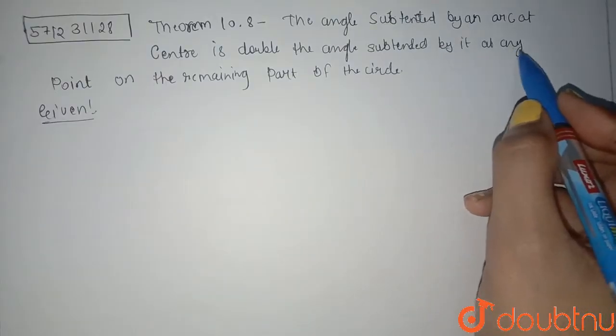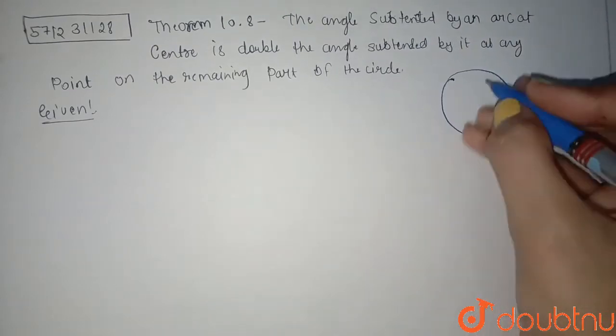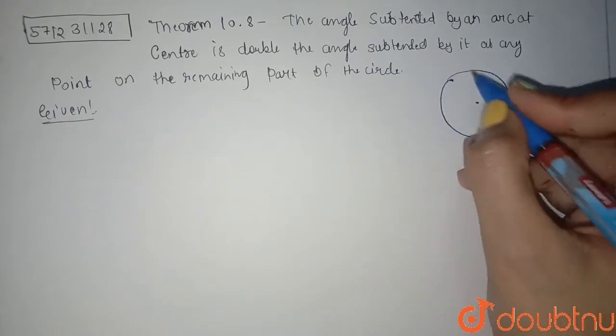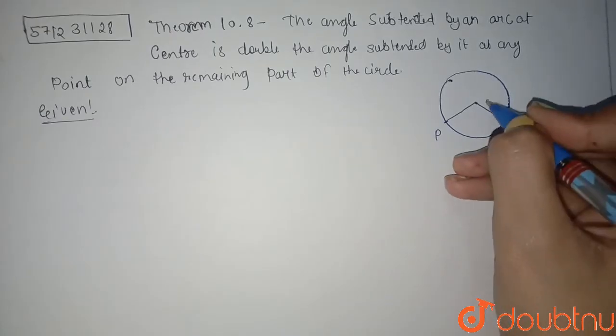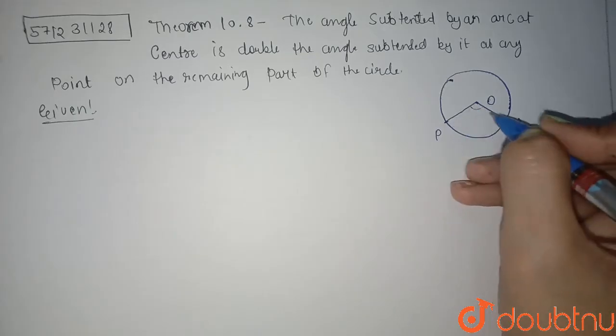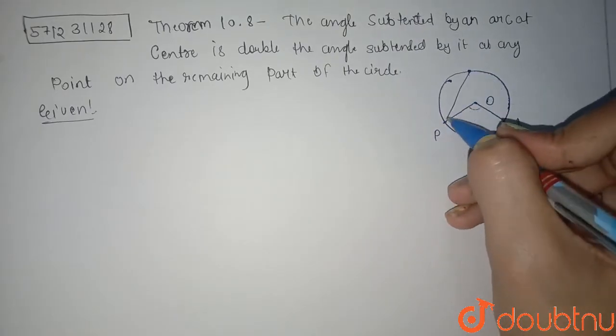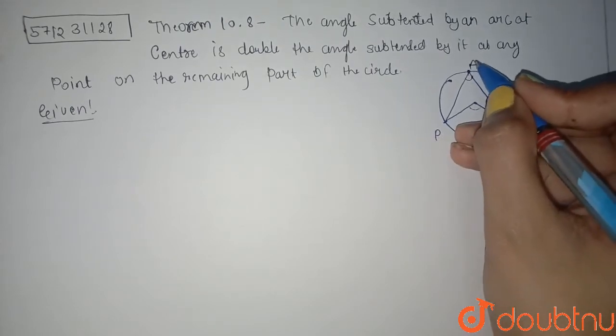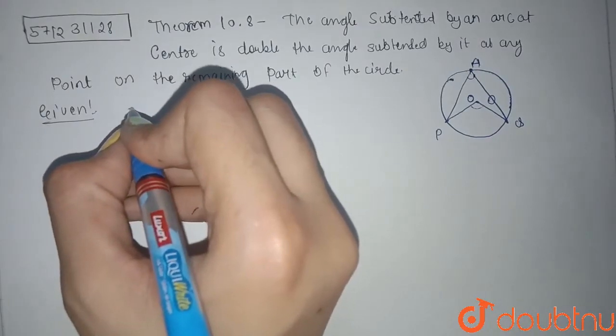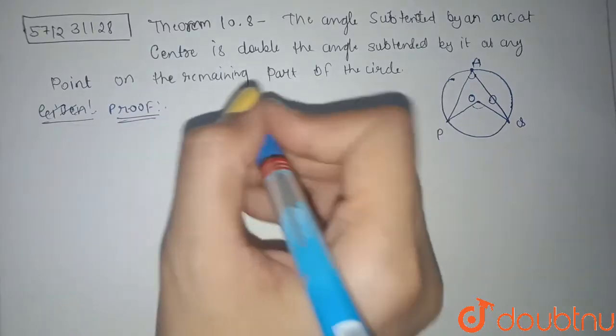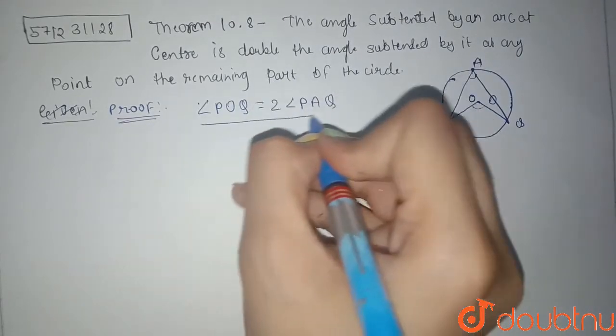First let me draw the figure and make you understand what the theorem is saying. We are given a circle and an arc, let's say this is arc PQ, and this is angle POQ. This is the angle it will make on the center. This is the rest part, so let's say here is point A. This is point A, this is point O. What we have to prove is angle POQ is equal to twice angle PAQ.